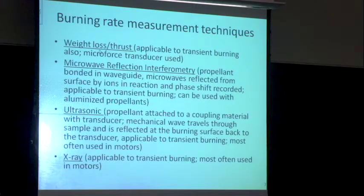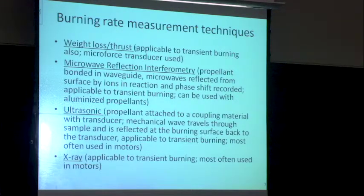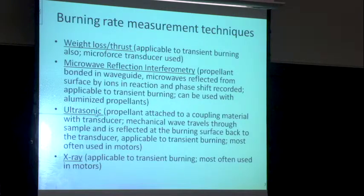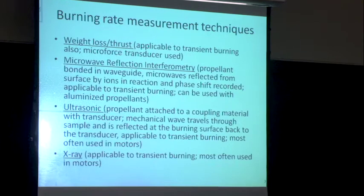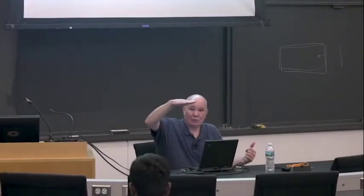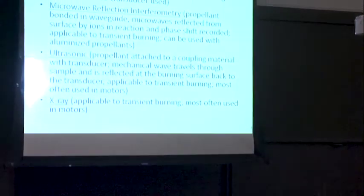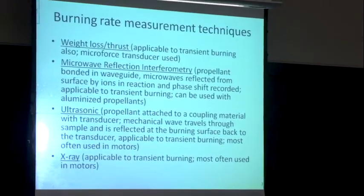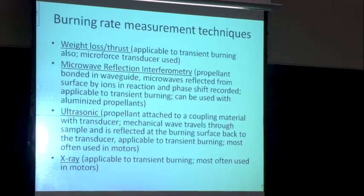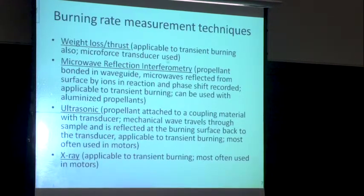Other techniques include putting it on a transducer and measuring weight loss or thrust as a function of time — more often used for transient burning and instantaneous processes. There's also microwave reflection interferometry, ultrasonics — where I attach the strand to a transducer, send a mechanical wave up to the surface, and measure the reflection time — and X-ray techniques. Most of these later techniques are more difficult and used typically for transient burning characteristics.